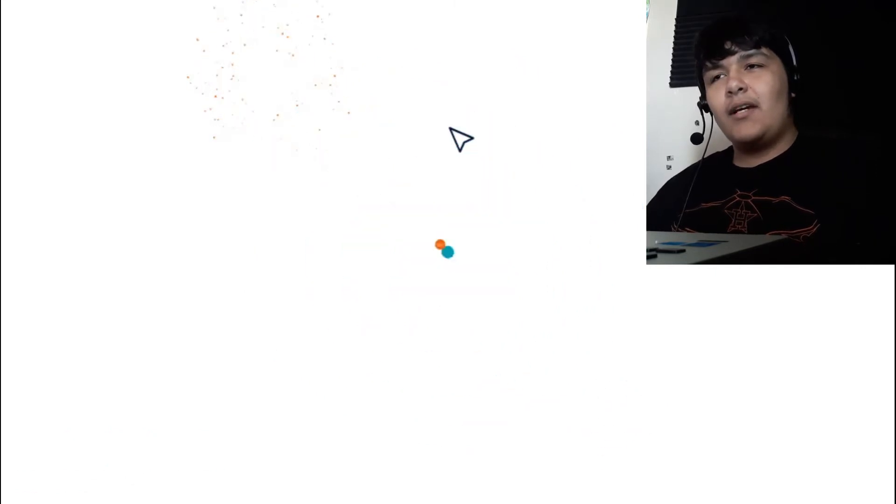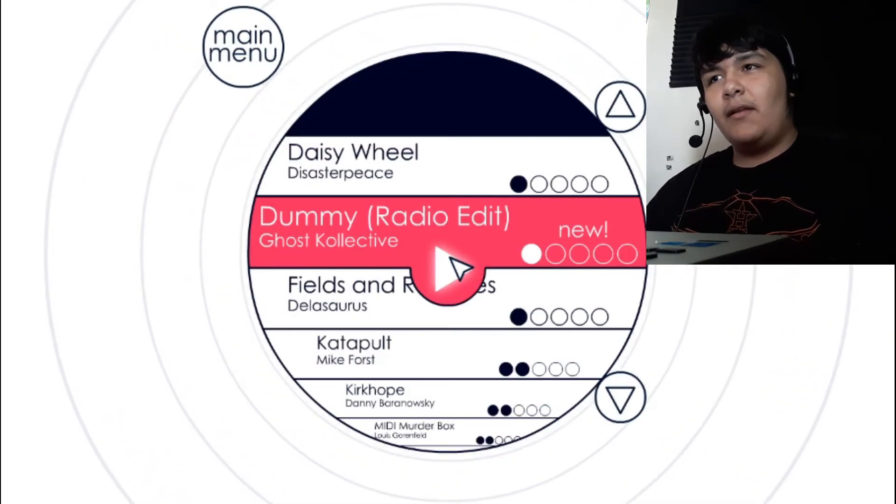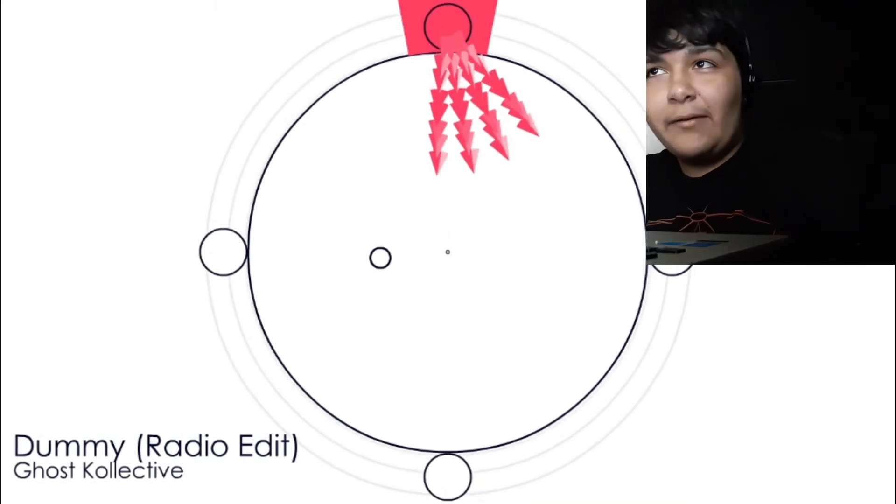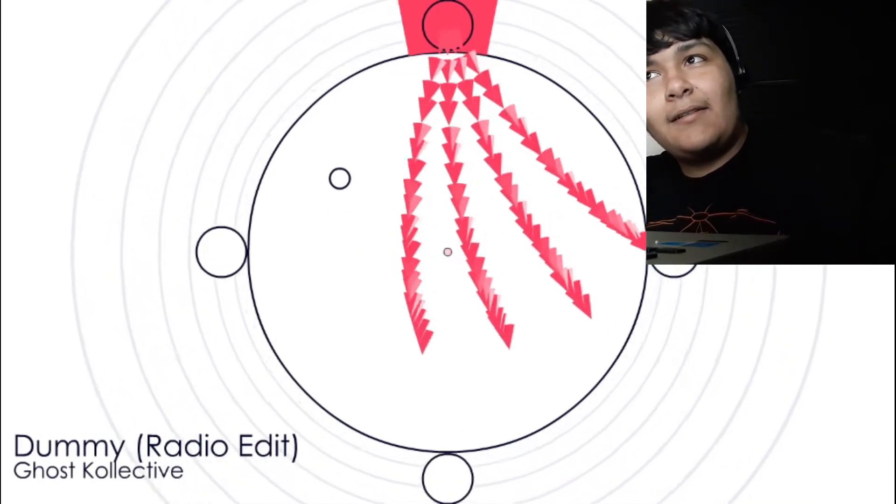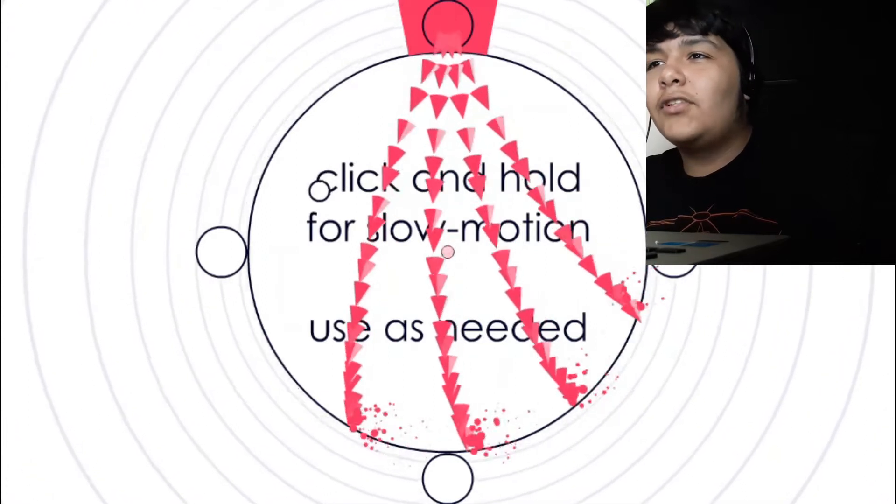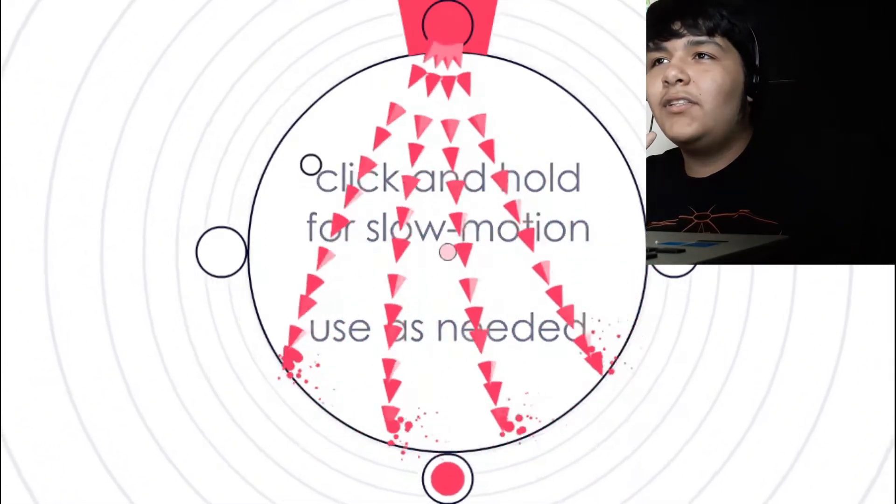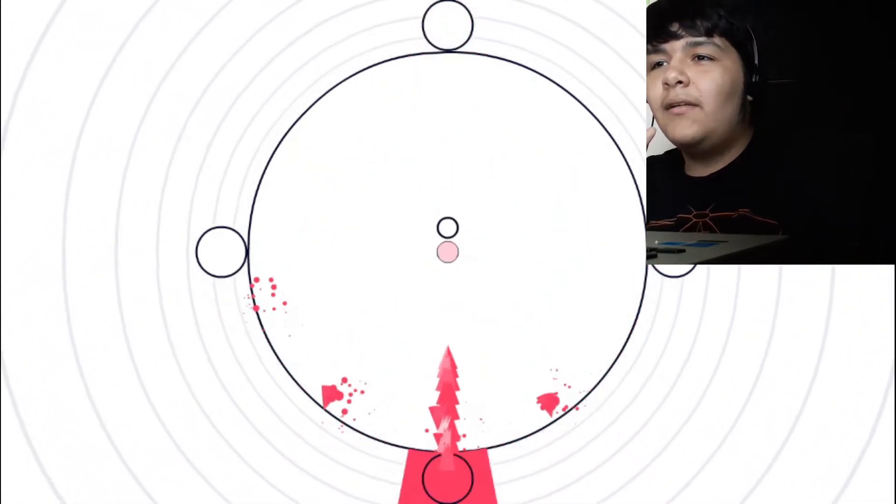New level unlocked. Okay. Back to tracks. Dummy. Radio edit. Ghost collective. I thought this is the dummy, like the Undertale remix dummy. I like that song a lot. Anyways, click and hold for slow motion. Use as needed. Oh, so it is just to make it easier a bit. Okay.